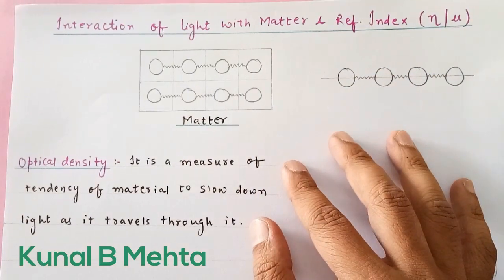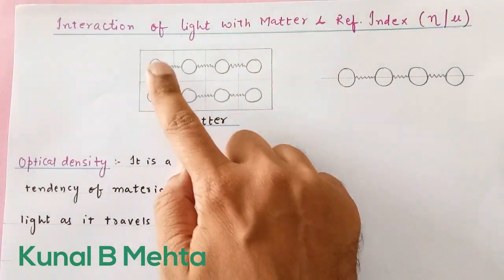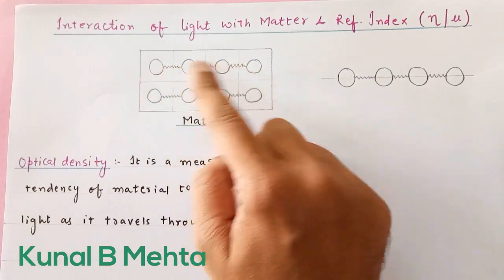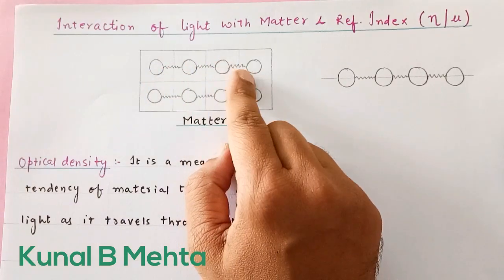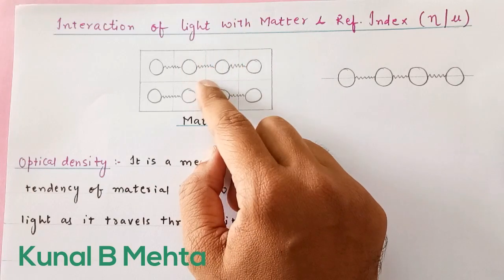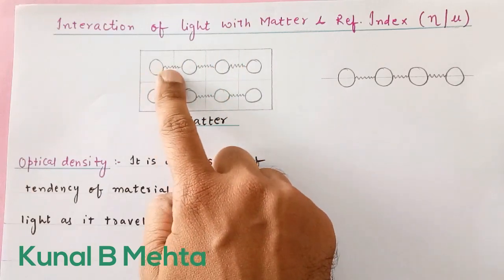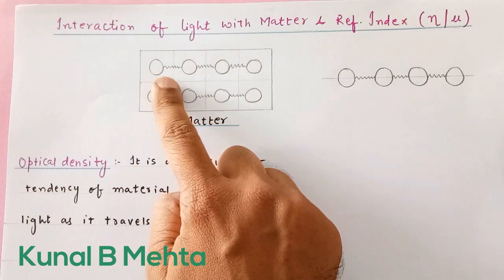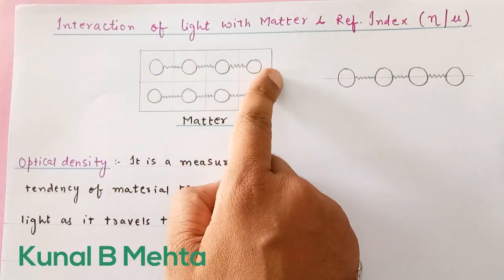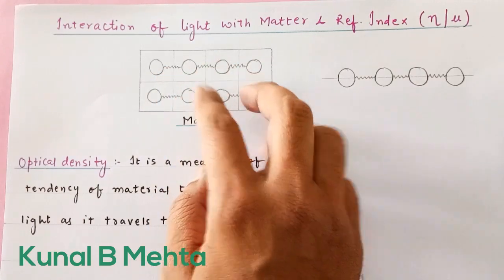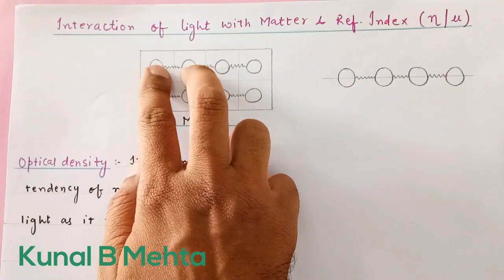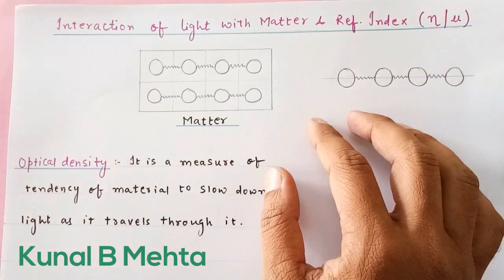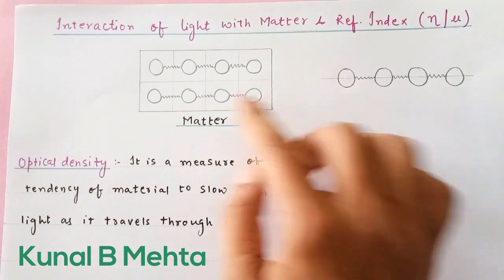So here we have atoms which are joined together by strong interactions — you can call them bonds or strong forces, cohesive forces. We would mostly like to call them bonds, and bonds are spring-like structures. If we are talking about solids then the gap between atoms would be small, and if we are talking about liquids then the gap would be larger.